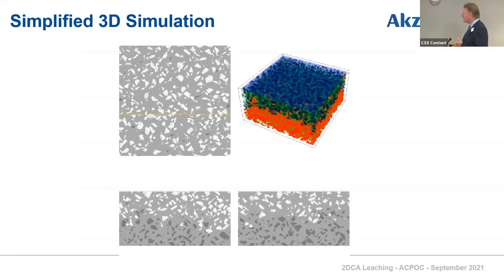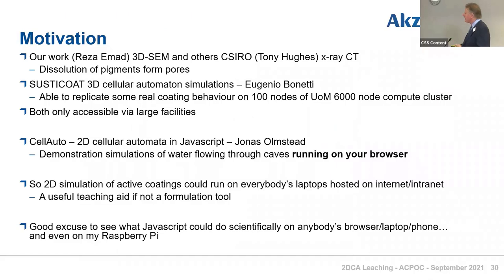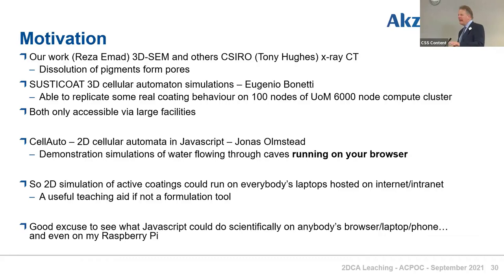These 3D simulations — done by Eugenio Bonetti as part of his PhD — are using the cluster at Manchester, taking a week to do a computation. That isn't something we could do on the desktop. We've also looked at this using very expensive kit, and teams such as CSIRO in Australia have used X-ray computed tomography to look at the loss of pigment from these pores. Eugenio's simulations managed to show that we get the same sort of leaching behaviour that we see experimentally, giving us an idea of how we can tune the properties to be even better.